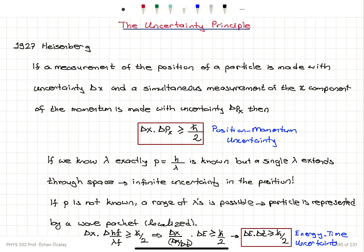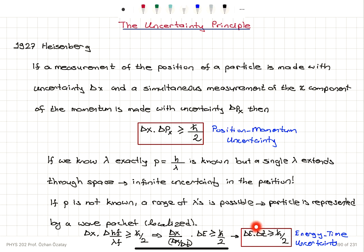So we have two versions. Position-momentum uncertainty: the uncertainty in position multiplied by the uncertainty in linear momentum is greater than or equal to h-bar over 2. And energy-time uncertainty: the uncertainty in energy multiplied by the uncertainty in measurement time is greater than or equal to h-bar over 2.